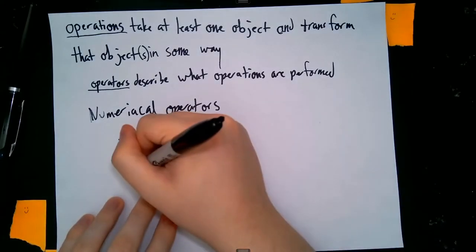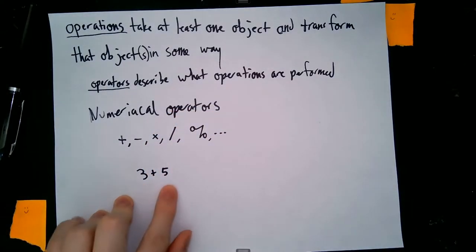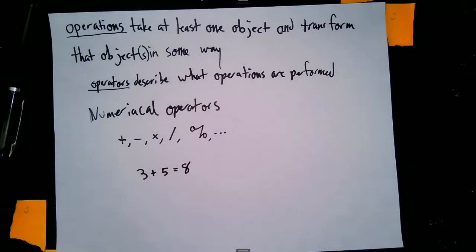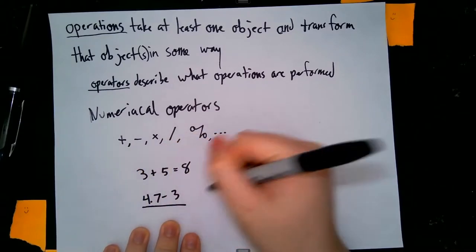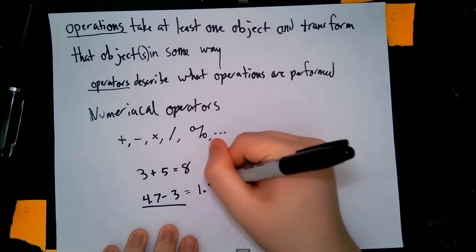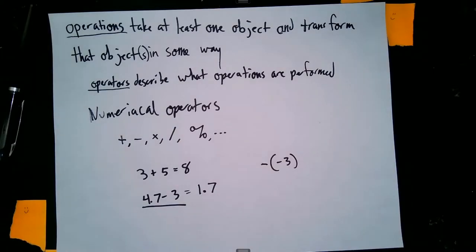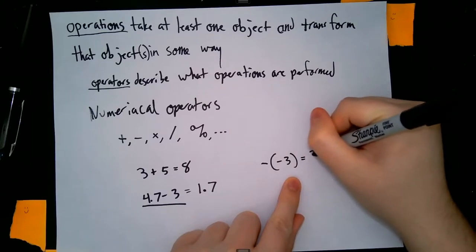As an example, we can take 3 plus 5. We're looking at the operation of addition, which takes 3 and 5 and transforms them by adding their values together — we get 3 plus 5 equals 8. You can also do something like 4.7 minus 3; this is the subtraction operation, and the result is 1.7. With numerical operators, we take in at least one number and our output is another number. An example of a numerical operator that uses only one number is the negation symbol: negative negative 3 gives us positive 3.